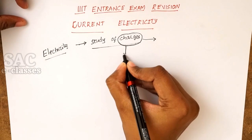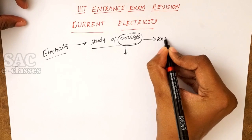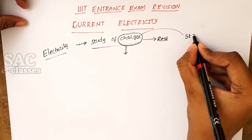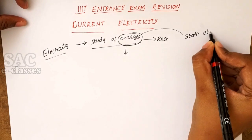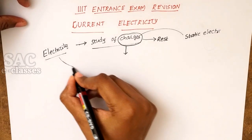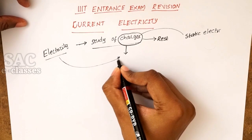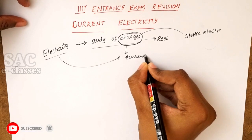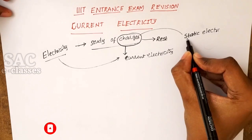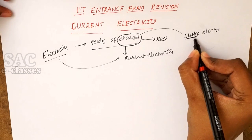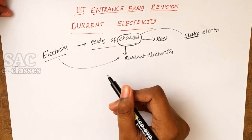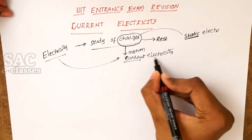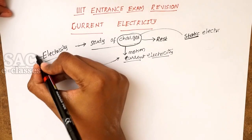When charges are kept at rest — that means there is no movement — we call that static electricity. Whereas when there is movement in the charges, we call that current electricity, which is our topic now. If charges are at rest, it is static electricity; if they are under motion, it is current electricity.